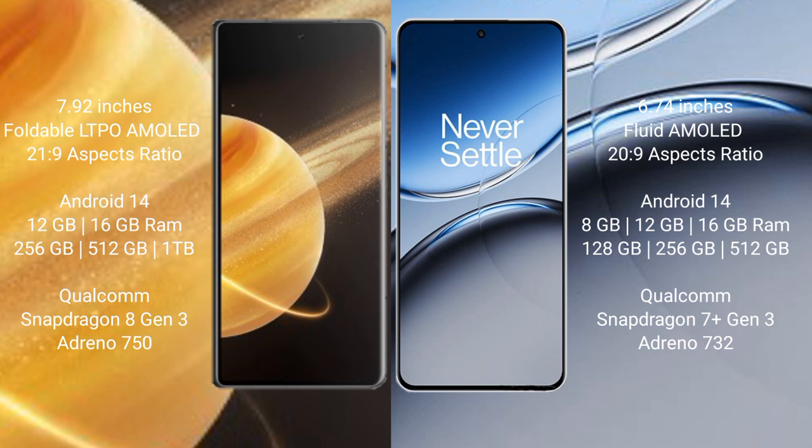OnePlus Nord 4 comes with 8GB, 12GB, or 16GB RAM and 128GB, 256GB, or 512GB internal storage. It features the Snapdragon 7 Gen 3 processor with an Adreno 730 or Adreno 732 GPU.